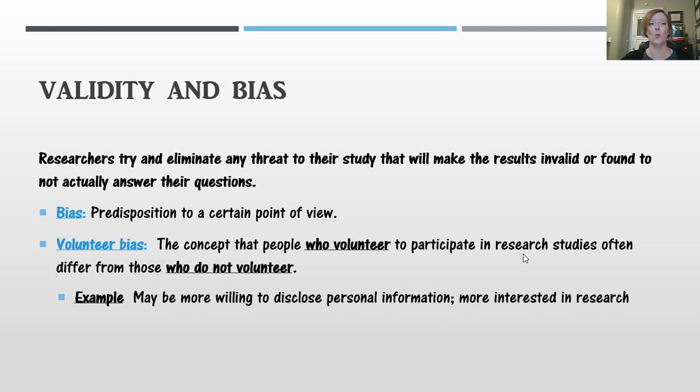So these are some fancy words, validity and bias. These are some things that researchers look very closely at when they are setting up their research study. Researchers try and eliminate any threat to their study that will basically make their results invalid. They want to answer the actual questions that they have posed, and so they need to look very closely at any bias that could be involved in their findings.